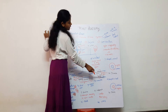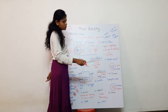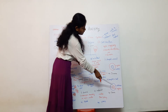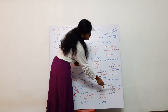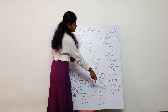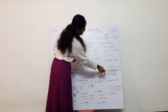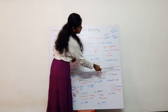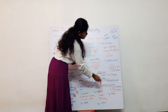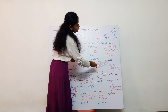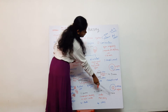In amphicribral, phloem is present on the outer side and xylem is present in the center. For example, ferns. So amphivasal example is Resina and amphicribral example is ferns.